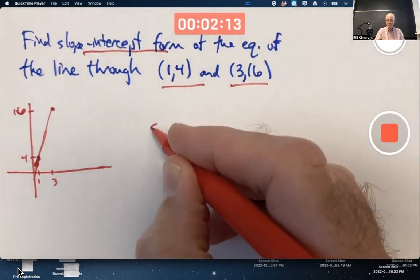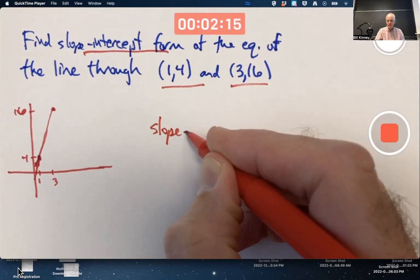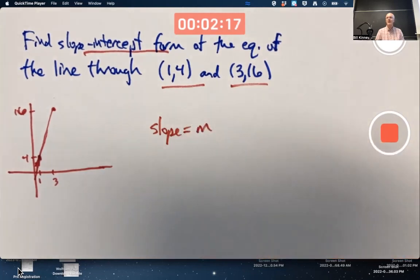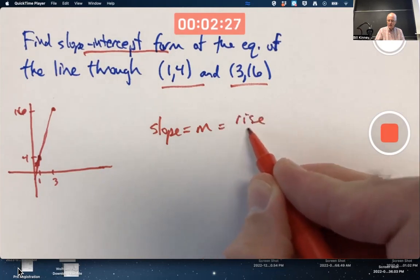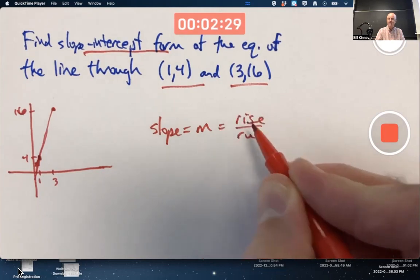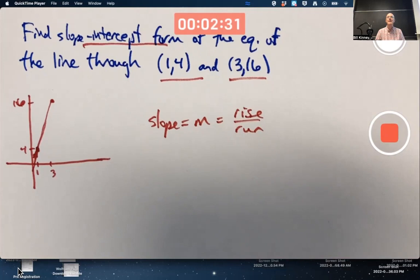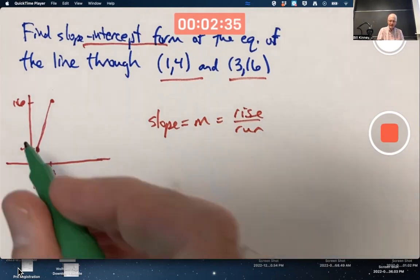First thing you should do is find the slope, often labeled with the letter M. You might remember slope is rise over run, and we can go ahead and write those words, rise over run.